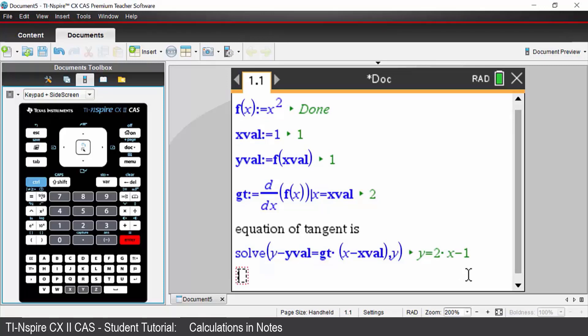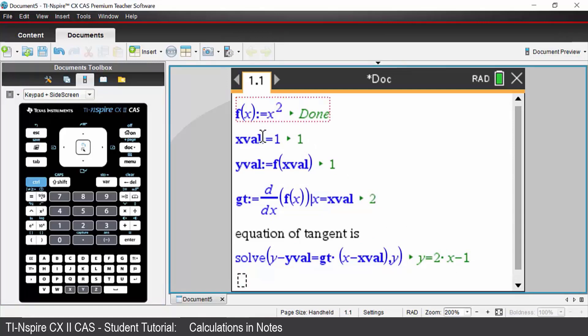Now the beauty of this interactive document is that you can now come back up and you can change any of your input values. So instead of a parabola, let's say I had a cubic. I just have to change that to x cubed, press enter and everything will automatically update.